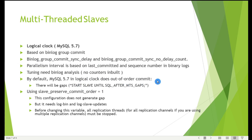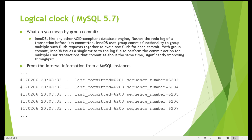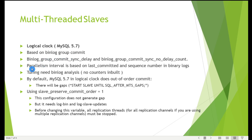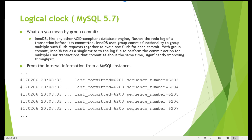If commits are out of order, there will be gaps. That is why you must set the slave-side variable slave_preserve_commit_order — this ensures everything is executed in order, preventing discrepancies and inconsistencies on your slave. Parallelism is determined by the last_committed and sequence_number values in the binary log.